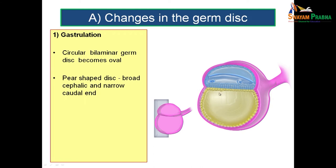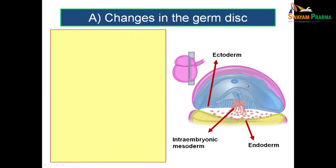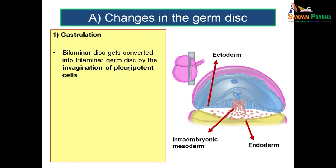Before the formation of the trilaminar germ disc, the circular disc becomes an oval one, roughly in the form of a pear with a broad cephalic end and a narrow caudal end. The bilaminar germ disc is then converted into trilaminar germ disc by the invagination of pluripotent cells from the epiblast.